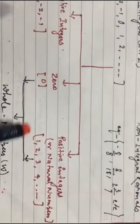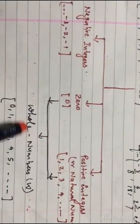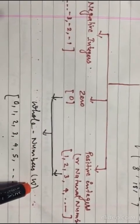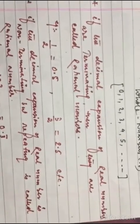And 0 and positive integers consist of whole numbers, which is denoted by W. That means 0, 1, 2, 3, 4, 5, etc., to infinity.